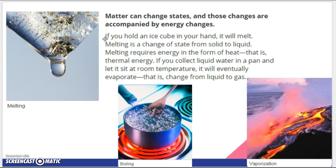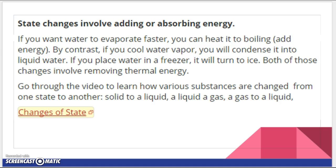So, for example, if you hold an ice cube in your hand, it will melt. Melting is the change of state from solid to liquid. Melting requires energy in the form of heat, that is, thermal energy. We'll talk about types of energy along the way. If you collect liquid water in a pan and let it sit at room temperature, it will eventually evaporate, or change from a liquid to gas. Or, if you add heat, it's going to boil. If you want water to evaporate faster, you can heat it to boiling, add energy. By contrast, if you cool water vapor, you will condense it into liquid water. If you place water in a freezer, it will turn to ice. Both of those changes involve removing thermal energy.